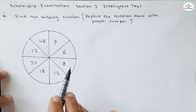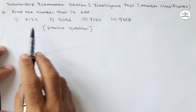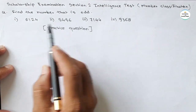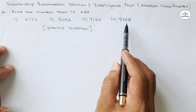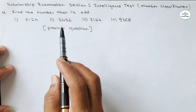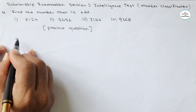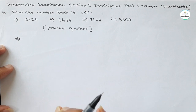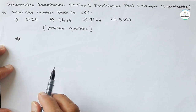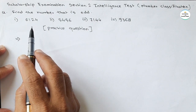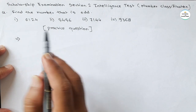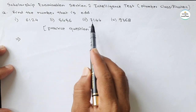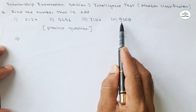See the solution of that practice question. This was the practice question given in the last video: find the number that is odd. Out of these 4 numbers, one number is odd and we have to find that number. While solving such questions, we have to find some rhythm, some relation between the numbers. The first number is 6124, second is 5456, third is 7144, and last one is 9368.